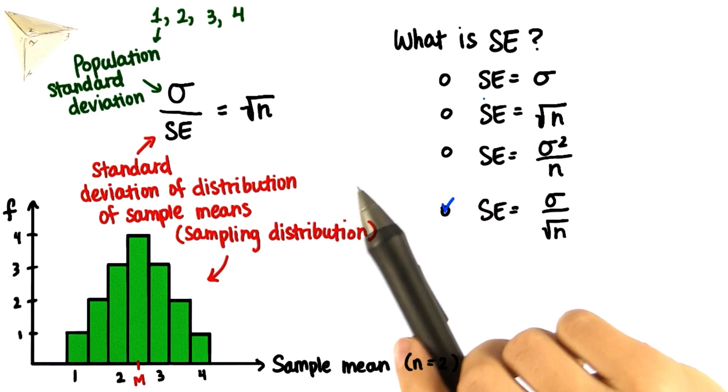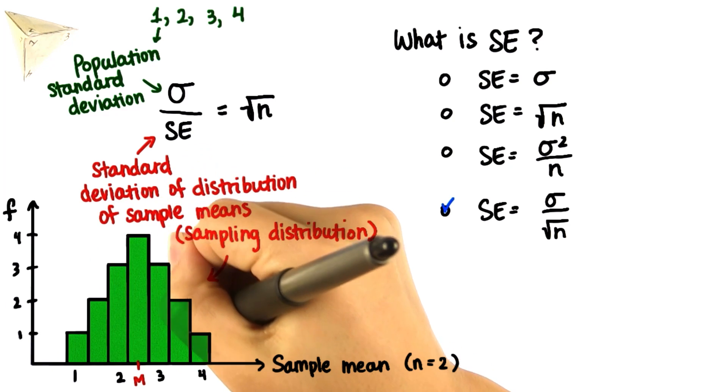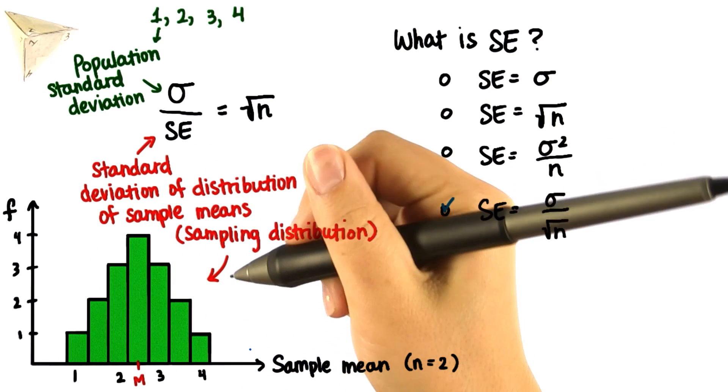Now remember what we were originally trying to find. We're trying to find where on the distribution of sample means a particular sample will lie.